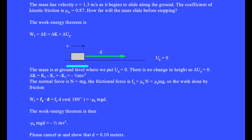Here is the block along the ground. The mass is at ground level where we put gravitational potential energy equal to zero. There is no change in height, so delta Ug equals zero. The change in kinetic energy is final minus initial, but the final kinetic energy is zero because the mass stops, so delta K equals minus one half mv squared. On level ground the normal force is N equals mg.